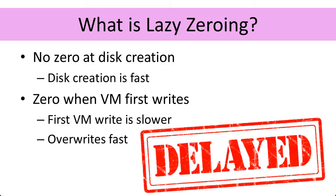Because with lazy zeroing we didn't do the zero up front, we have to do the zero on access. This means that a virtual machine with a lazy zero disk is going to find it slower to write into space that it's never written to before compared to overwriting a piece of data it's already got. The first write to a block of data is slow because there's a zero first and then a data write, but overwrites just have that data overwritten — there's no delay for the zeroing. This gives you the feeling of why lazy zeroing might be good and bad at the same time: it's very quick for the administrator, but it can have some impact on the virtual machine's performance.